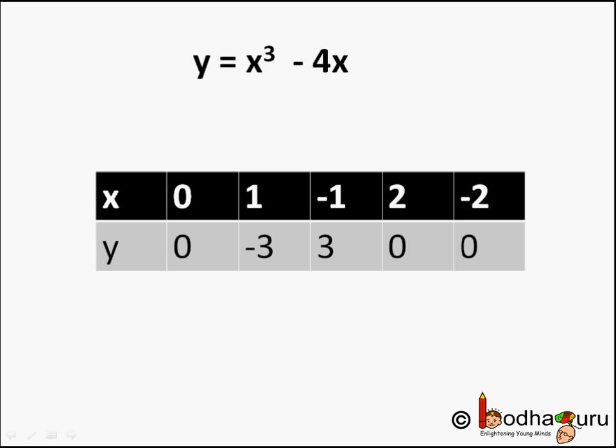When x equal to 0, y would be equal to 0 cube minus 4 into 0 which is equal to 0. So, we found one zero of the polynomial at x equal to 0. Is there more than 1?